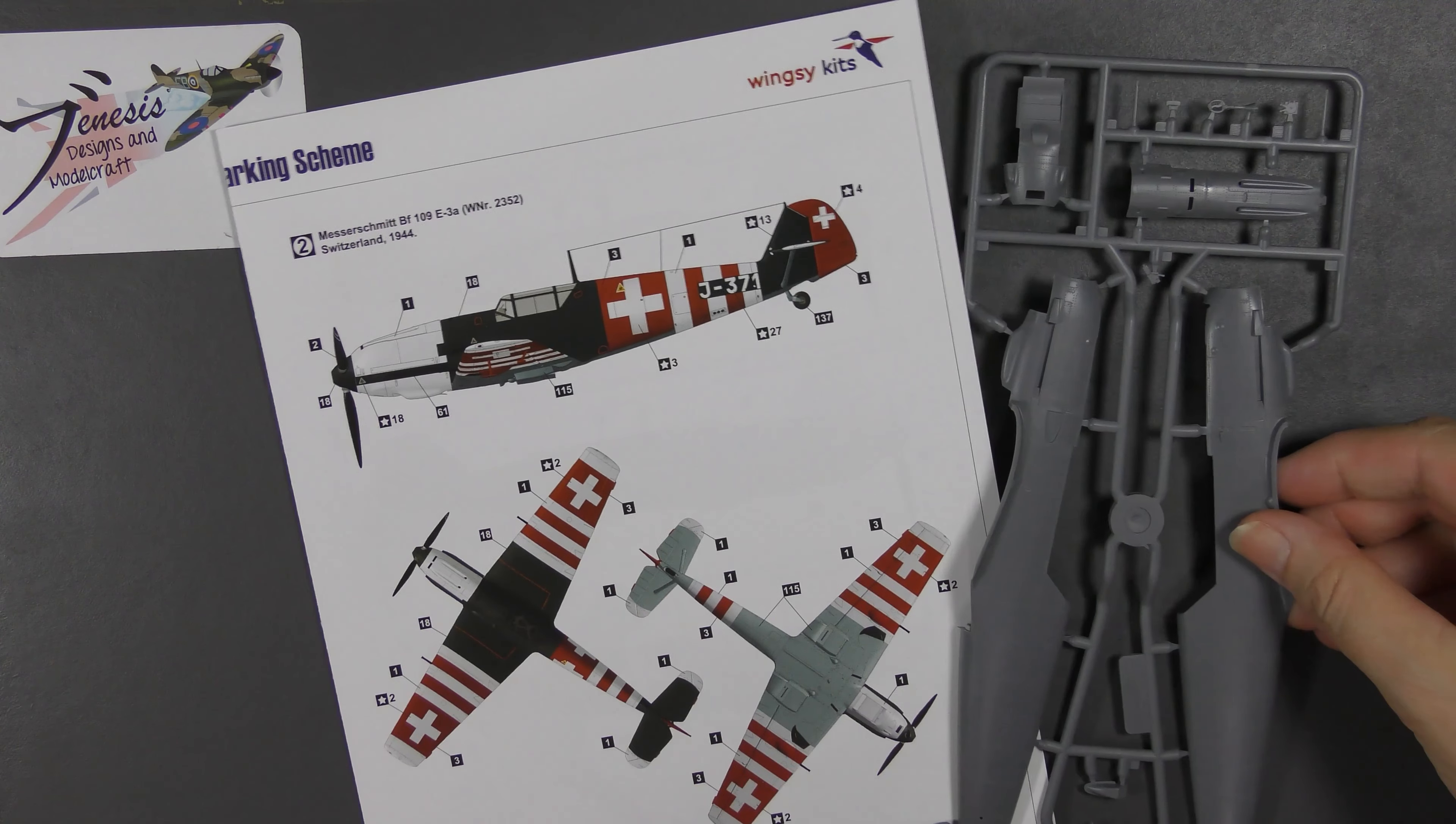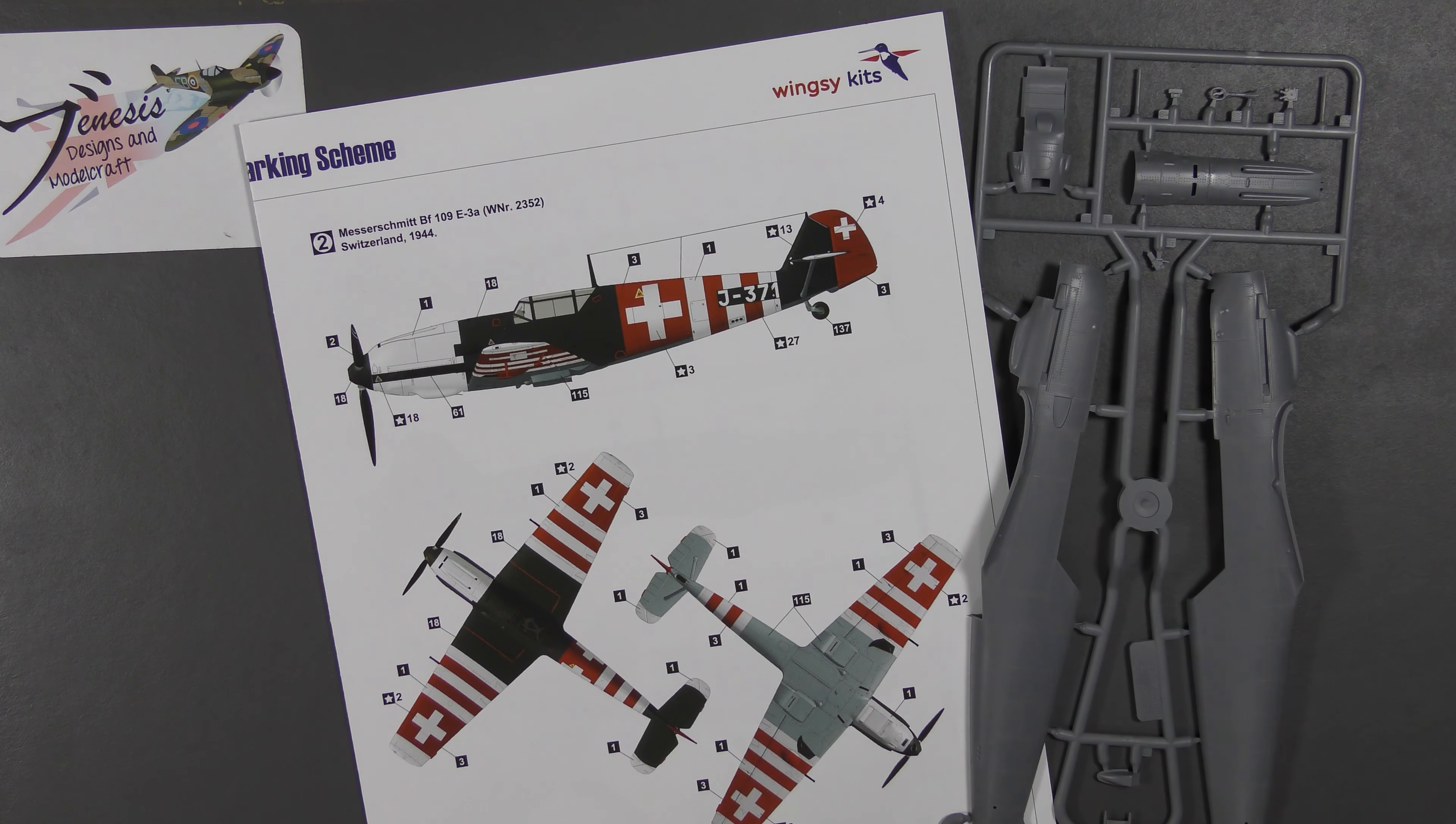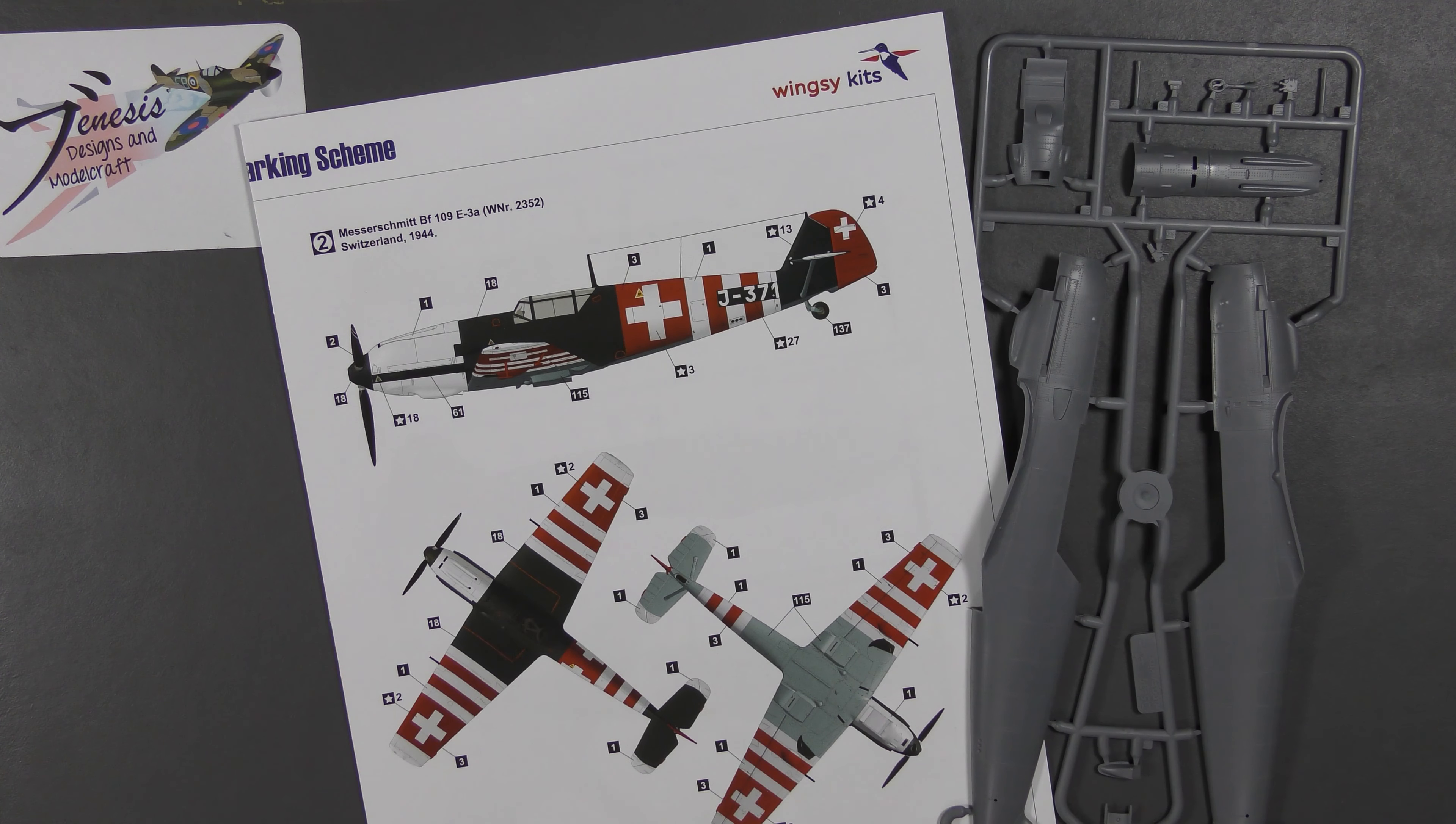This compares to me with the Mercy boxing of the Eduard G model which is the Finnish Air Force. The Wingsy 1/48 scale 109 E-3a, absolutely beautiful looking kit. As I say, it looks incredibly similar to the sort of thing we've been seeing from Eduard over the last few years. It's a similar price point as well but you do get everything you need in the box as you've just seen.